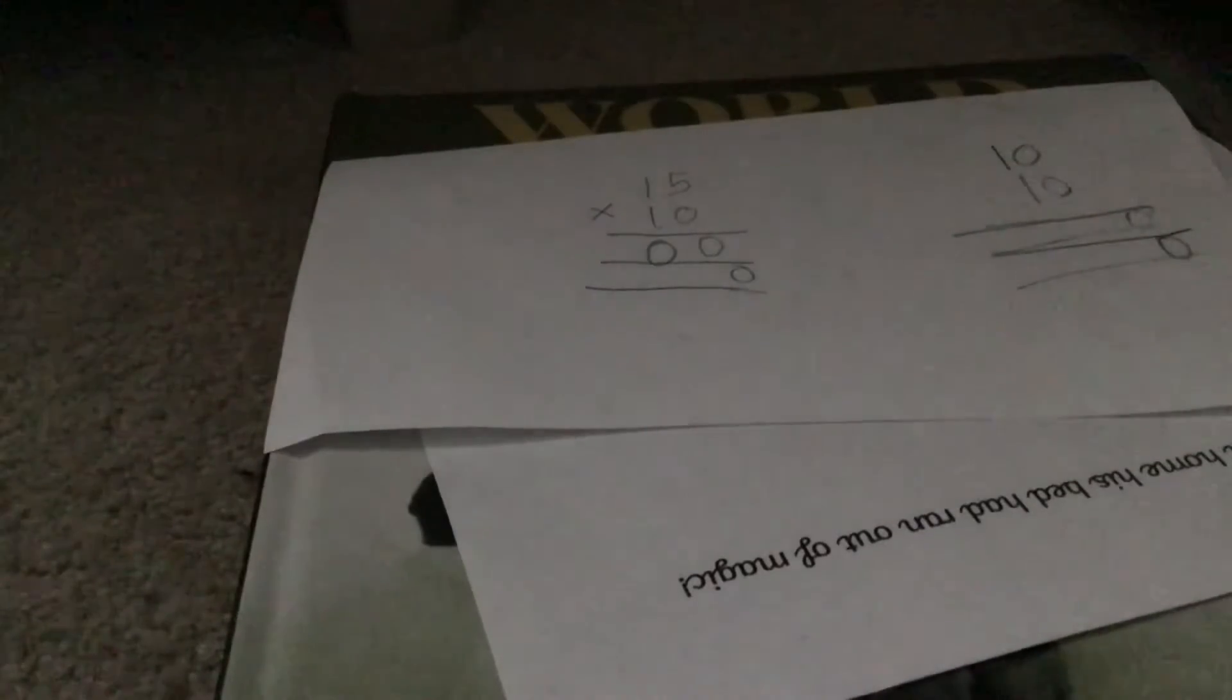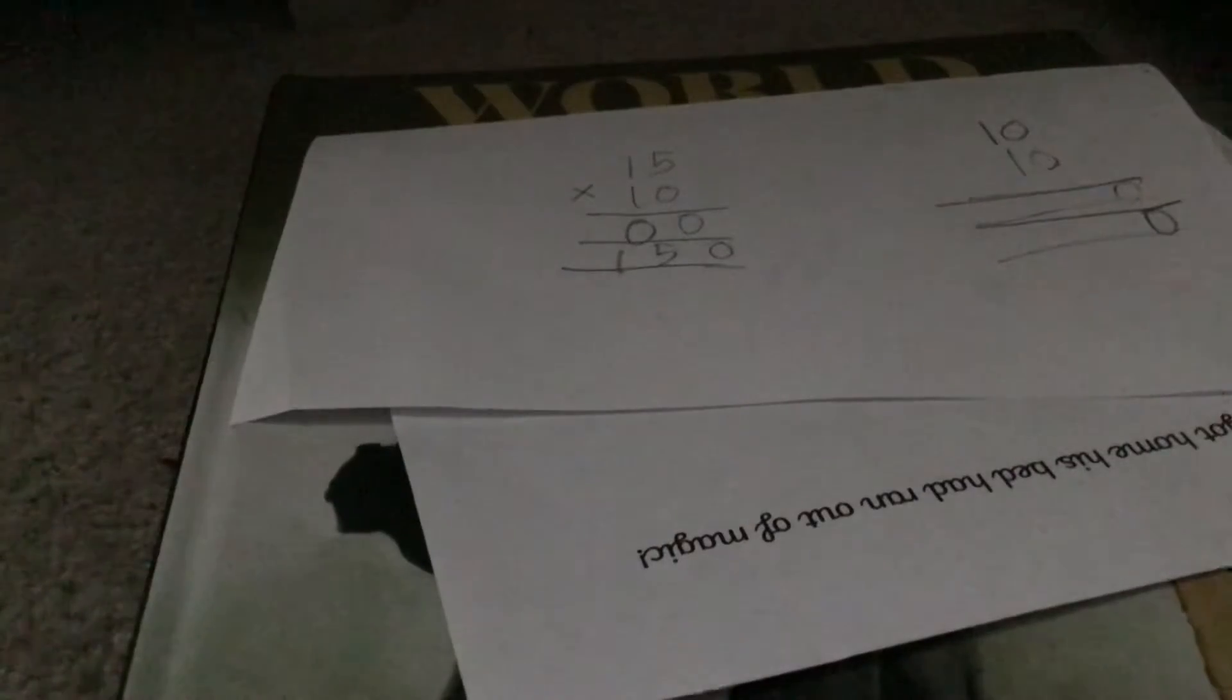And then 1 times 1, which is 1. I mean, you kind of just need to understand the order. It's like 0 times 5, 0 times 1, 1 times 5 - you don't do the same numbers, it's just that order. And then you add that and that, and then it will be right.